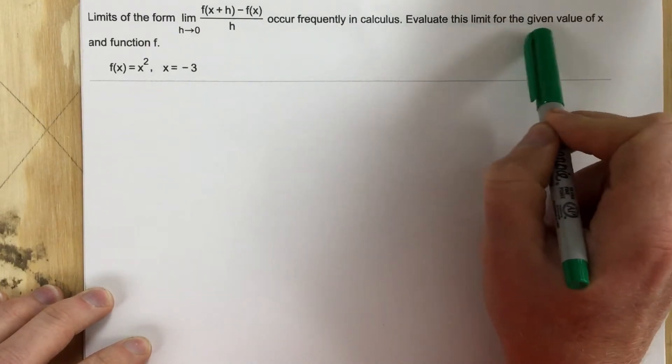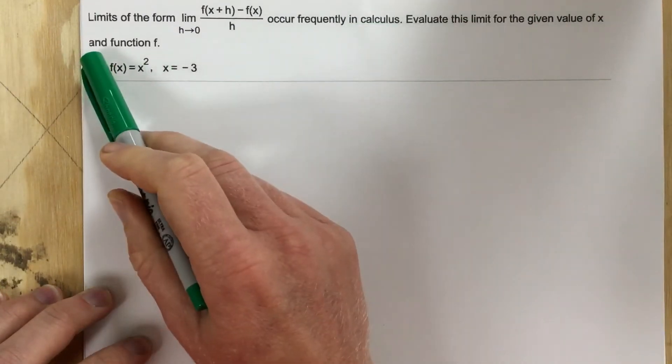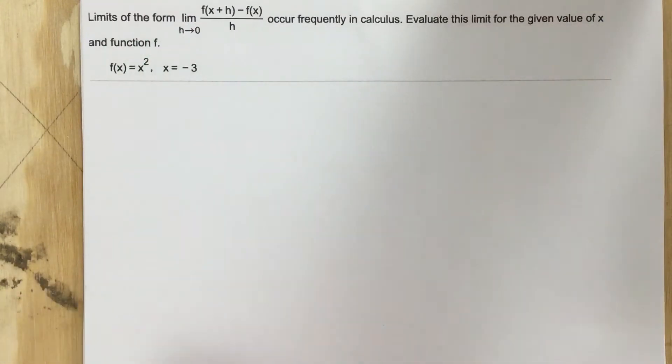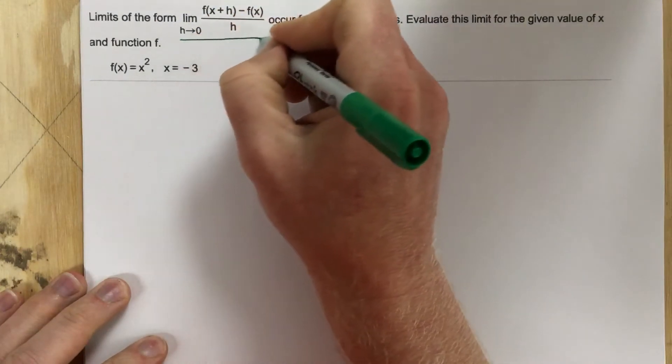Evaluate this limit for the given value of x and function f. What they want you to do is find essentially the slope, because that's really what this does - it finds the tangent slope.